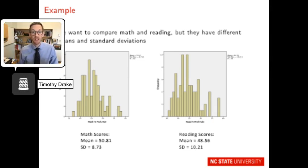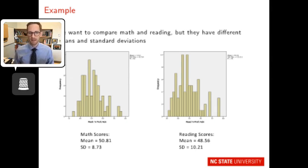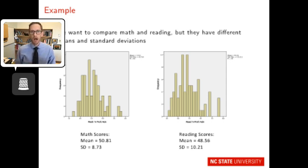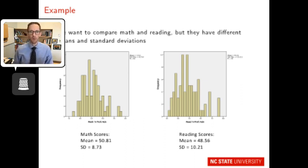Here's an education example. We want to compare math and reading scores, but they have different means and standard deviations. The math scores have a mean of 50.81 and a standard deviation of 8.73, while reading scores have a mean of 48.56 and a standard deviation of 10.21 — a larger spread. Both histograms approximate a normal distribution, but the different properties make it difficult to compare how students are doing across math and reading directly.